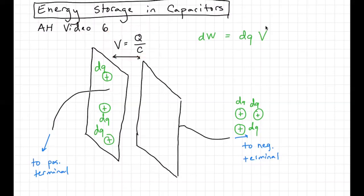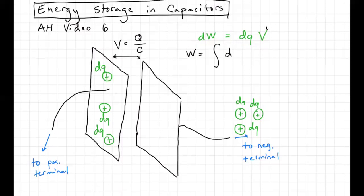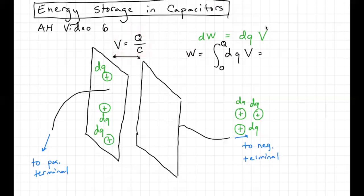We can start thinking about what happens if you add up all the work done, starting from no charge on the plates — right when you connect a battery to empty plates — to when those capacitor plates are completely full. A little bit of work is given by a little bit of charge moving through some potential difference. The total work done will be the integral of dq times v, from q equals zero to q equals big Q. Since v can be written as little q over C, my integration variable is little q.